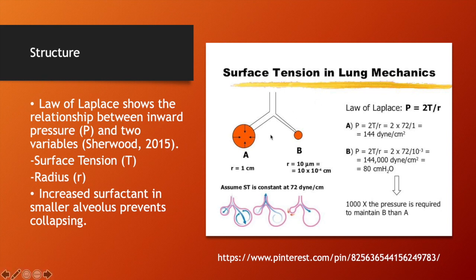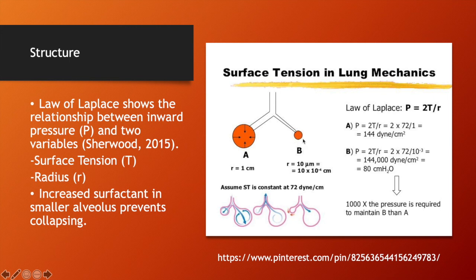An interesting fact is that the smaller alveolus, when connected to a terminal bronchiole, produces more surfactant — or has surfactant that is more compacted — which helps reduce surface tension more. This makes sense because the smaller alveolus has a smaller radius, which increases inward pressure. So the increased surfactant density compensates for that and prevents the smaller alveolus from collapsing.